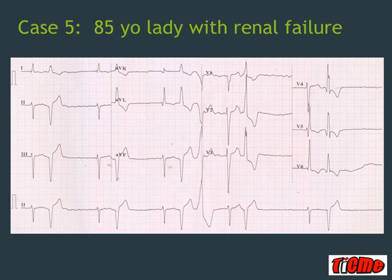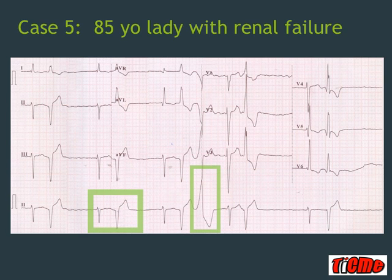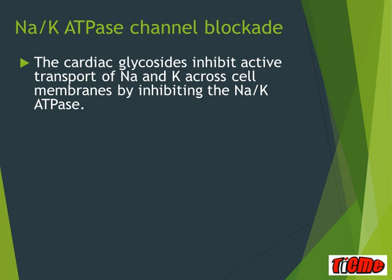Case 5: an 85-year-old lady with renal failure. Her ECG is regularly irregular, showing a narrow complex beat followed by ventricular ectopics — multifocal ventricular ectopics — and a non-isoelectric baseline with a wobble, most likely slow AF with multiple ventricular ectopics. This is absolutely classic for digitalis toxicity: sodium-potassium ATPase channel blockade. The cardiac glycosides inhibit active transport of sodium and potassium across the cell membrane.